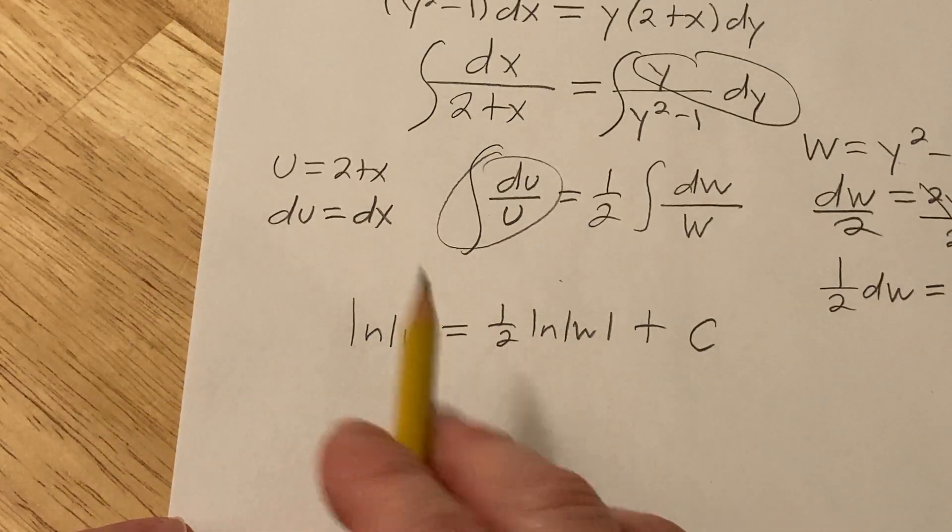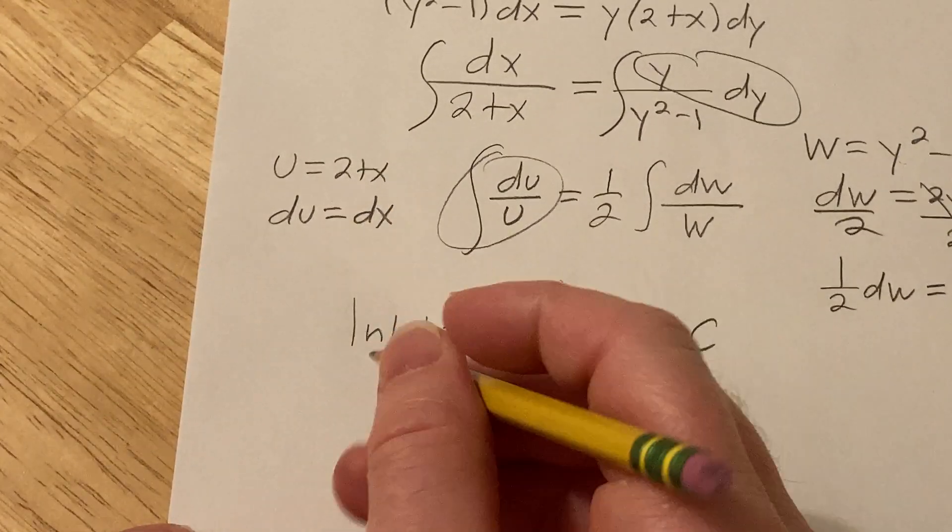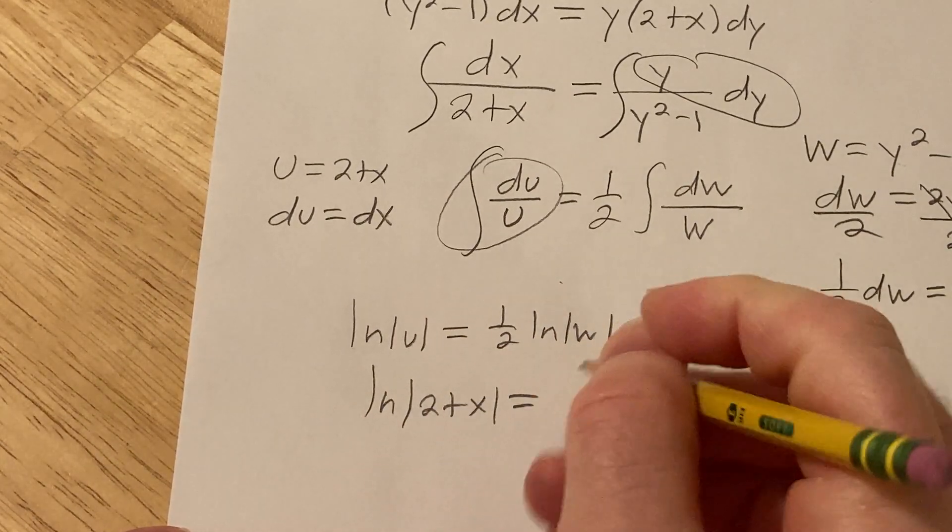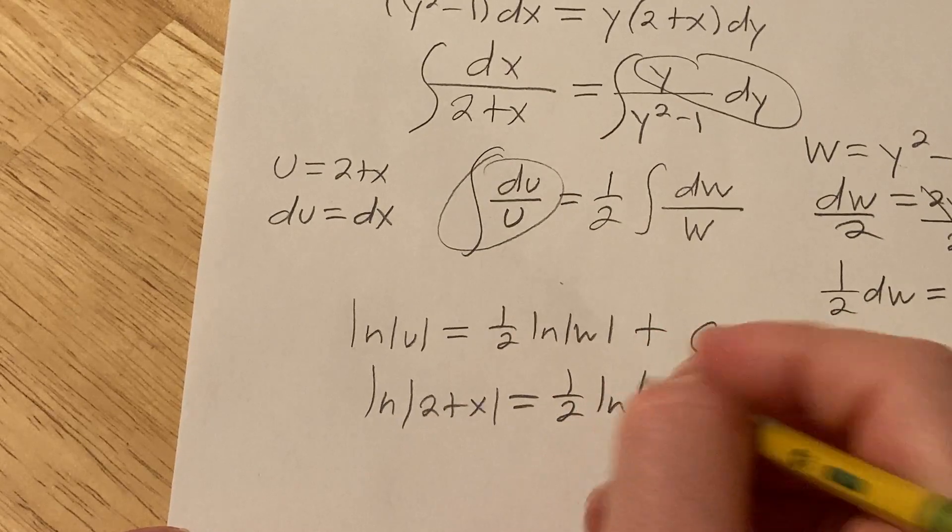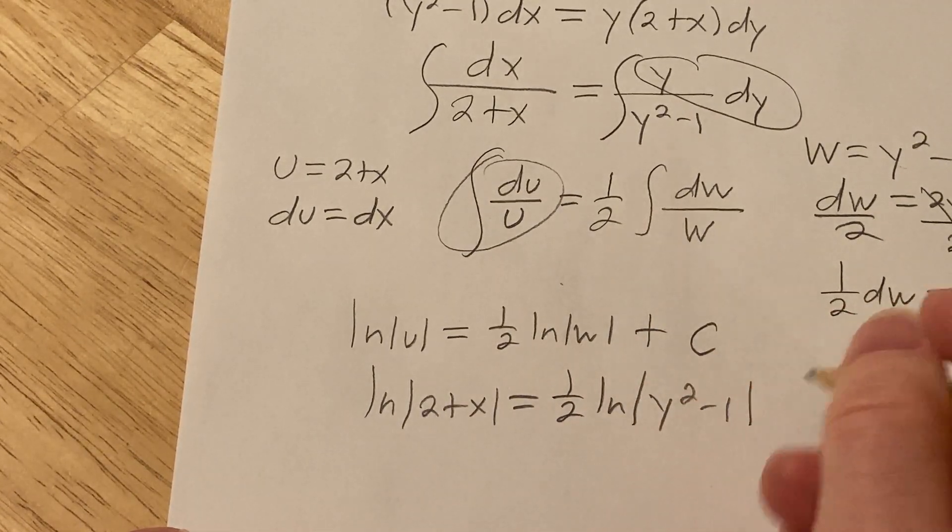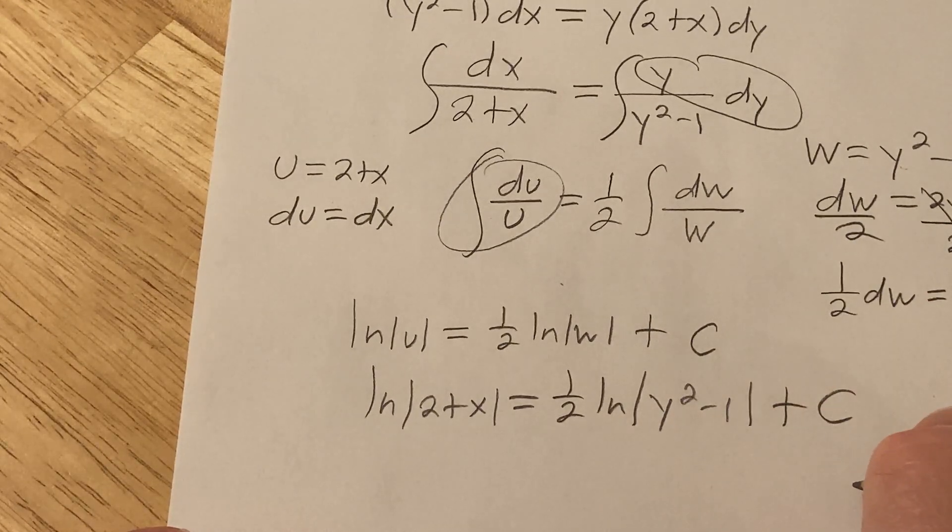So we're not done. We have to go back to the original variables. So u is 2 plus x. So ln absolute value 2 plus x. Equals 1 half ln w is y squared minus 1. Plus our constant of integration capital C.